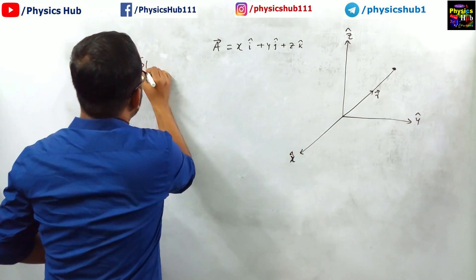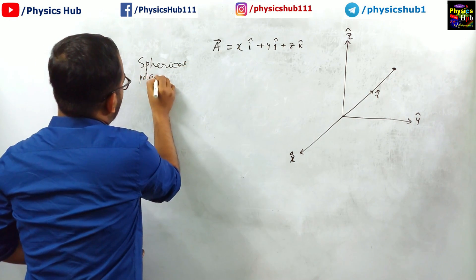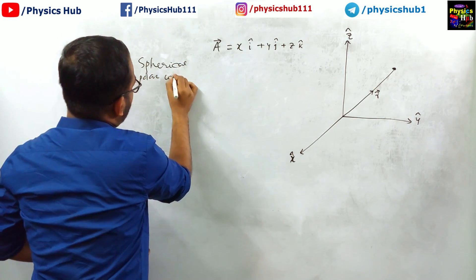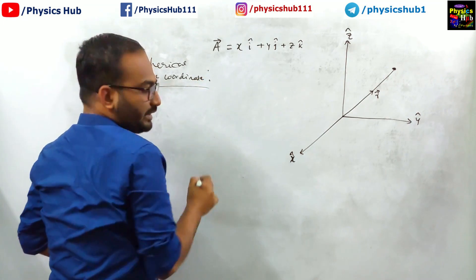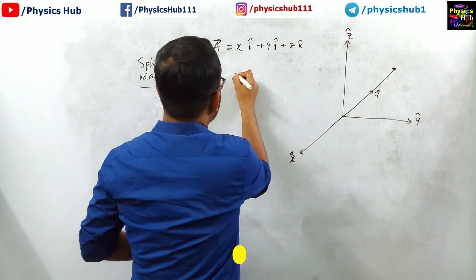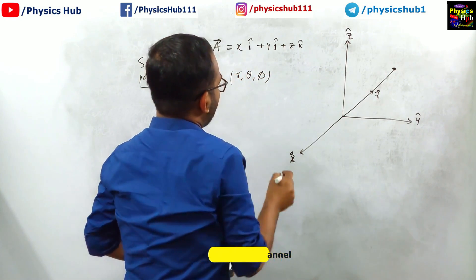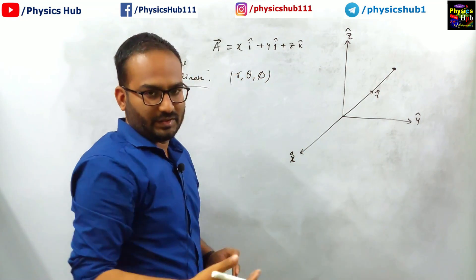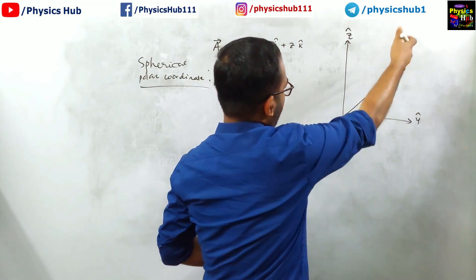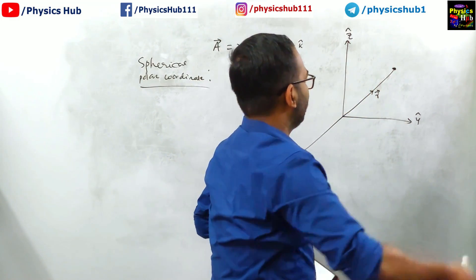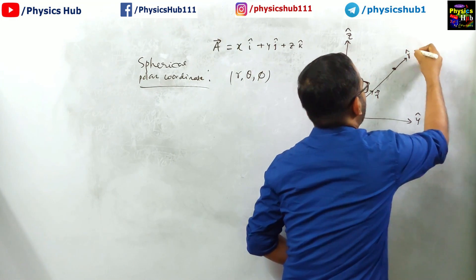Now, for the spherical polar coordinate, what are the coordinates we have? Instead of x, y, z we now have R, theta, phi. How are these coordinates defined? R is understandable — this is R. So the direction of R will be along this; this will be your R-cap.